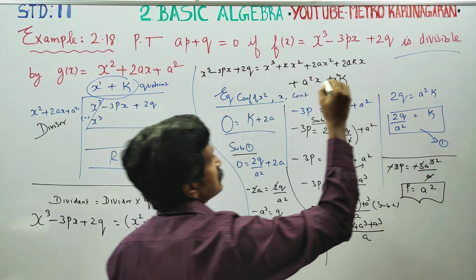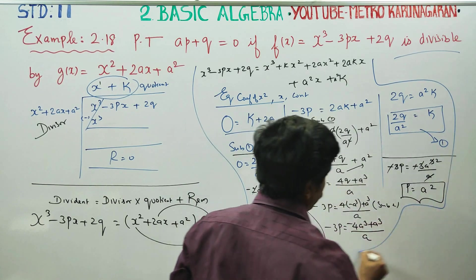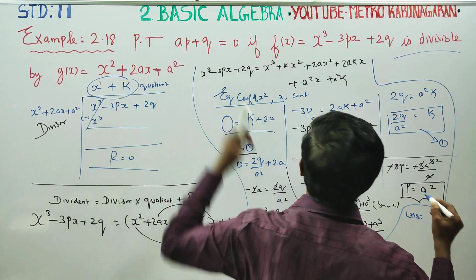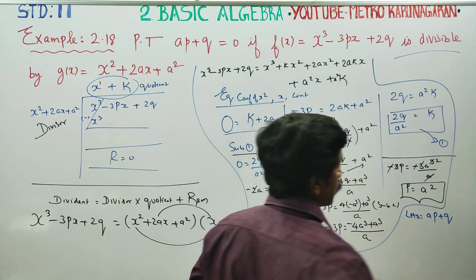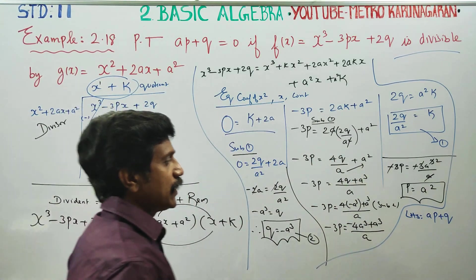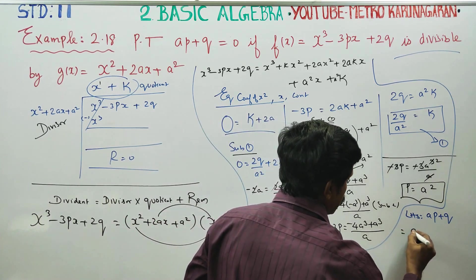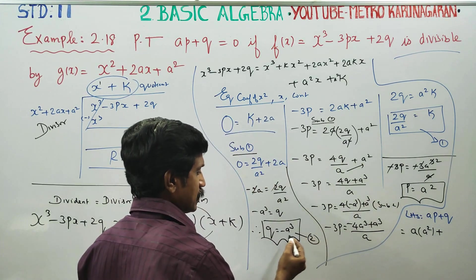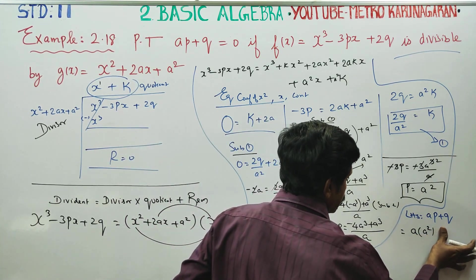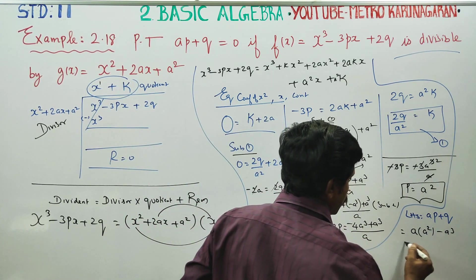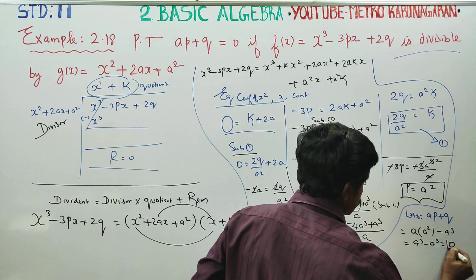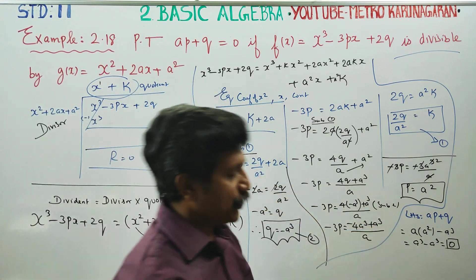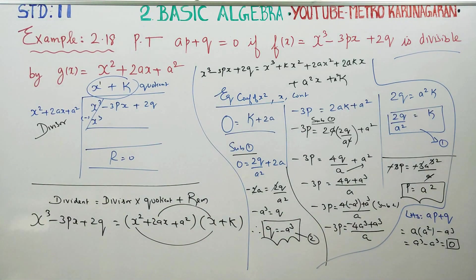I am going to start with my LHS. What is my LHS? AP plus Q. Substituting: A times A squared plus Q gives minus A cubed minus A cubed, which equals 0. Therefore AP plus Q equals 0. Thank you.